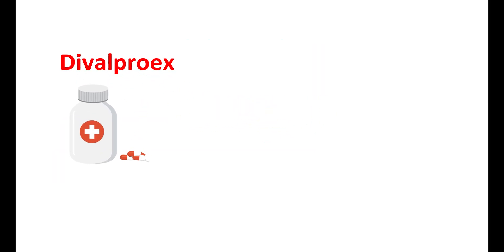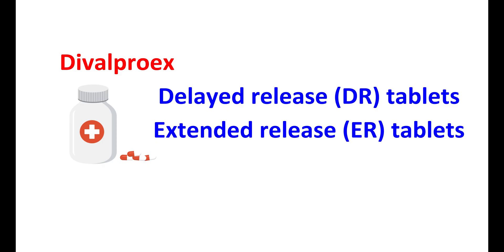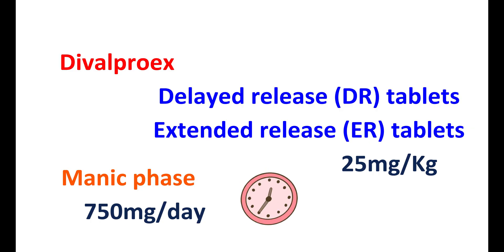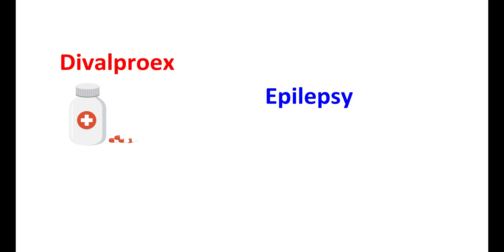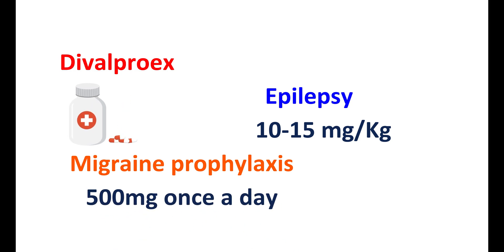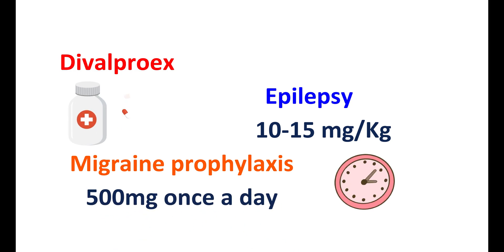Divalproex is available as delayed-release tablets, extended-release tablets, and capsules filled with sprinkles. The release differs between formulations, so dosage is based on body weight. For the manic phase of bipolar disorder, it is used at 750 mg per day in divided doses; extended-release tablets are used at 25 mg per kg of body weight once daily. For complex partial seizures, the initial daily dose is 10 to 15 mg per kg. For migraine prophylaxis, extended-release tablets are given at 500 mg once a day for one week, with dose adjustment based on clinical response.